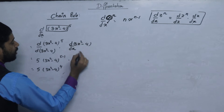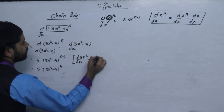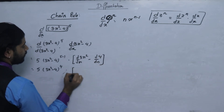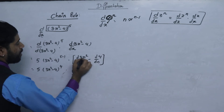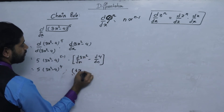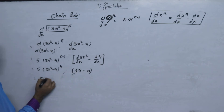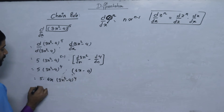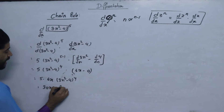Now, the differentiation of 3x squared with respect to dx, minus the differentiation of 4 with respect to dx. This gives us 6x minus 0, so we get 5 times 6x times (3x squared minus 4), which equals 30x times (3x squared minus 4).